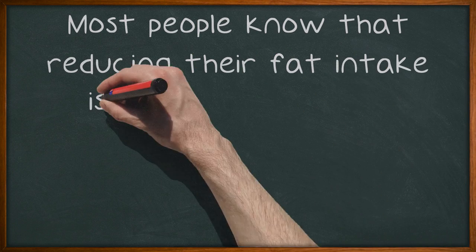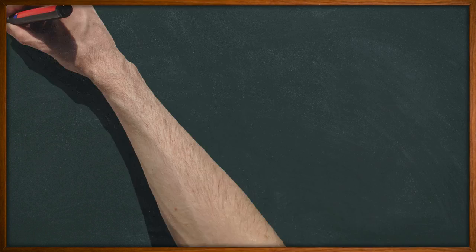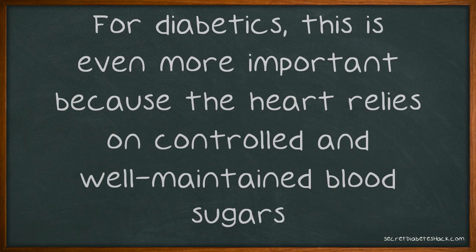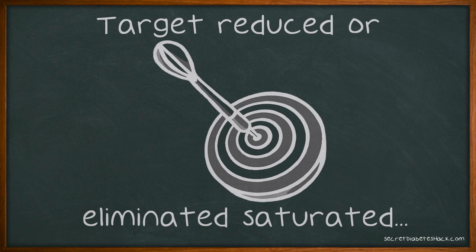Most people know that reducing their fat intake is a major step in a heart-healthy diet. For diabetics, this is even more important because the heart relies on controlled and well-maintained blood sugars. Target reduced or eliminated saturated fats, which are often from animal sources and include lard, bacon, and butter, as well as plant fats like vegetable shortening.